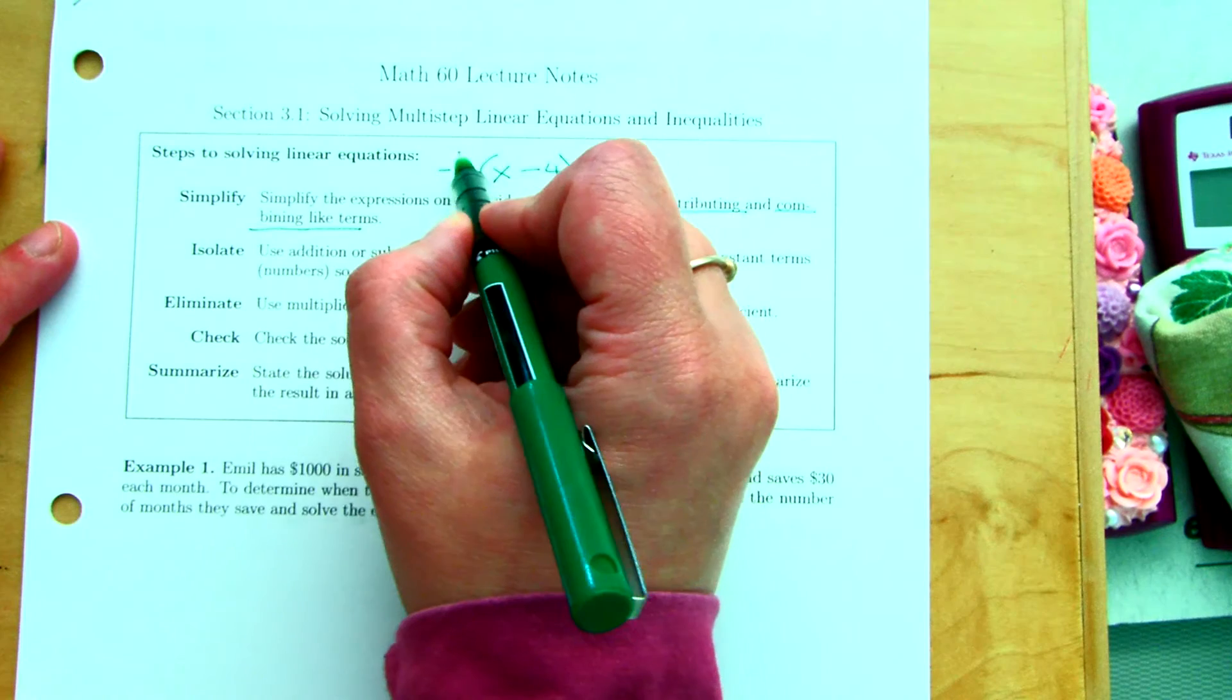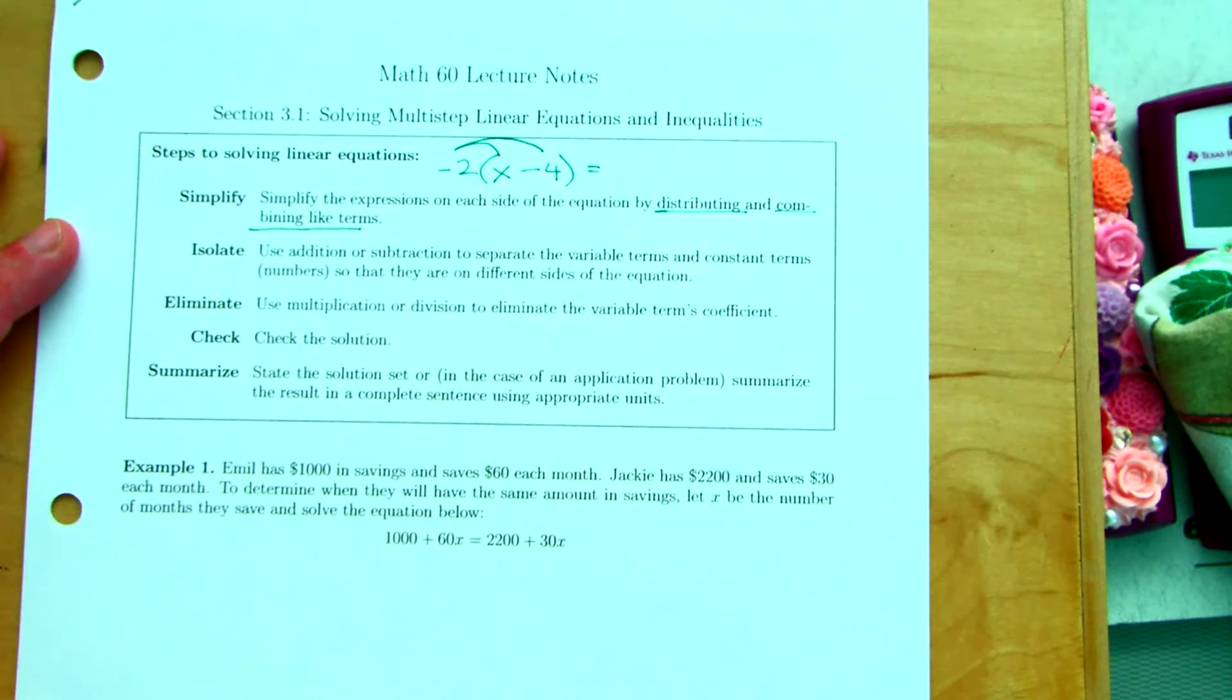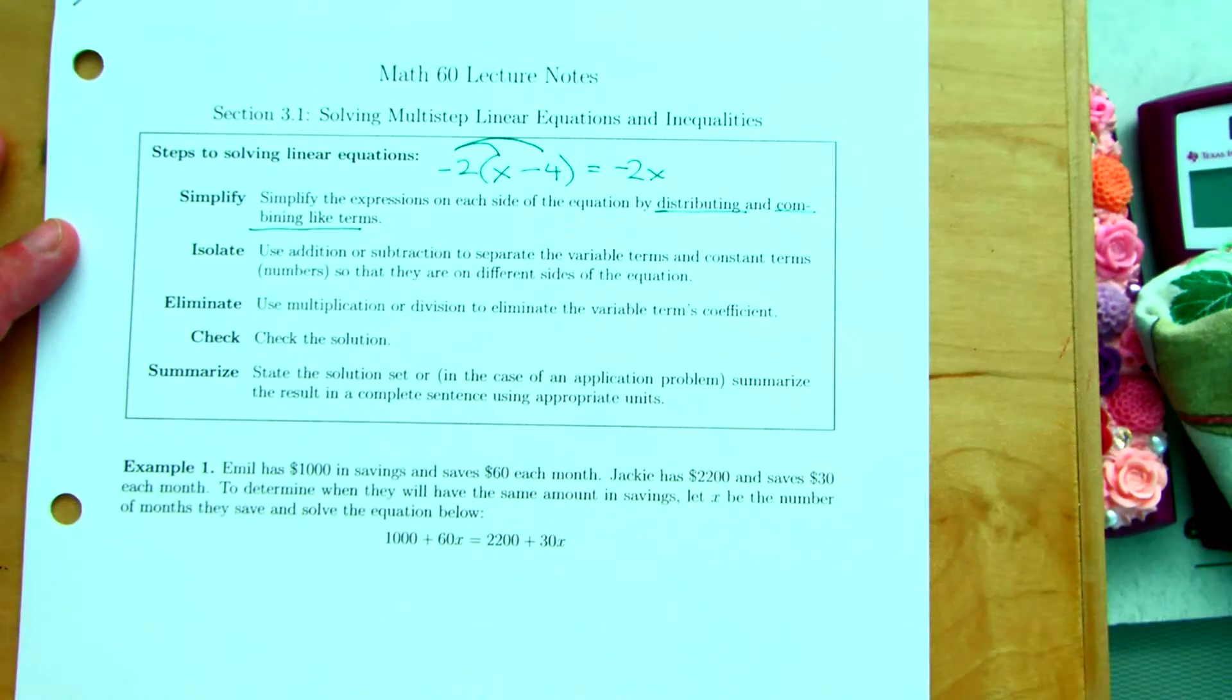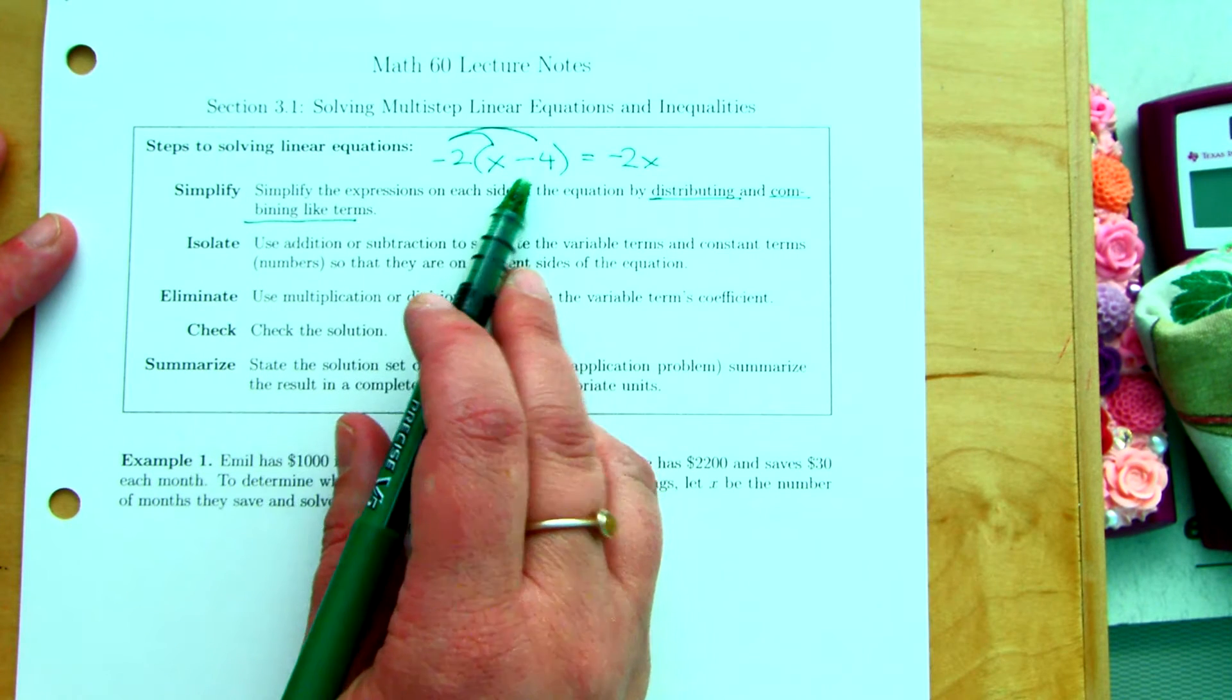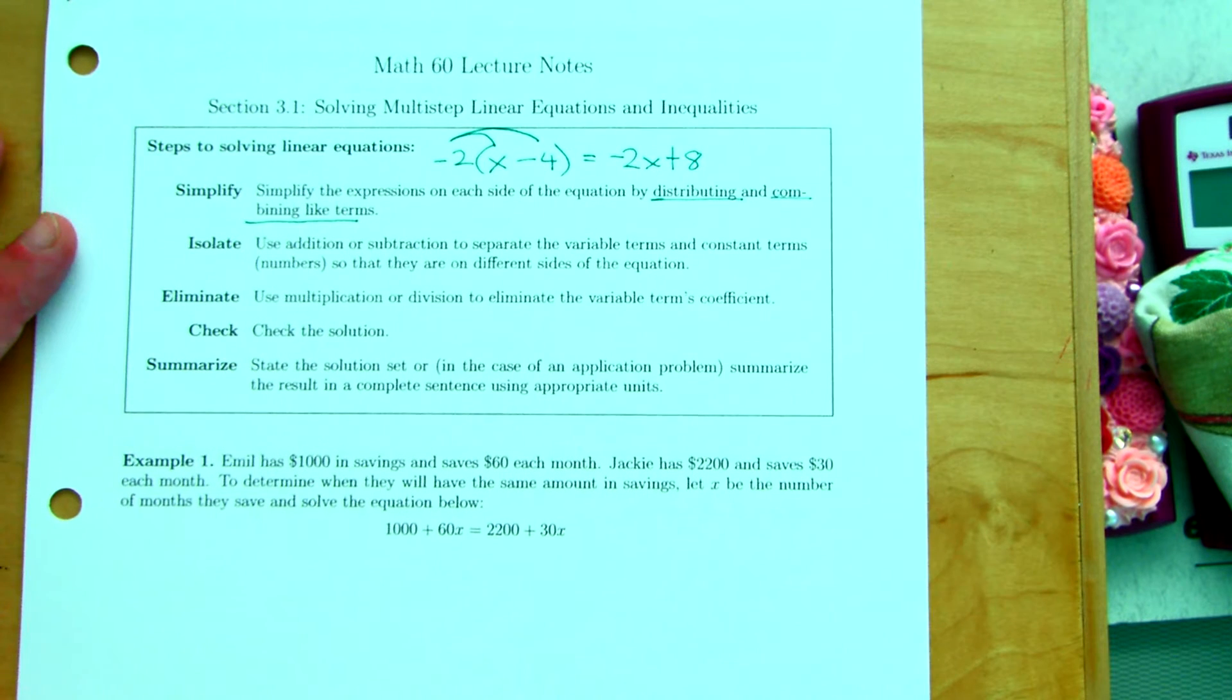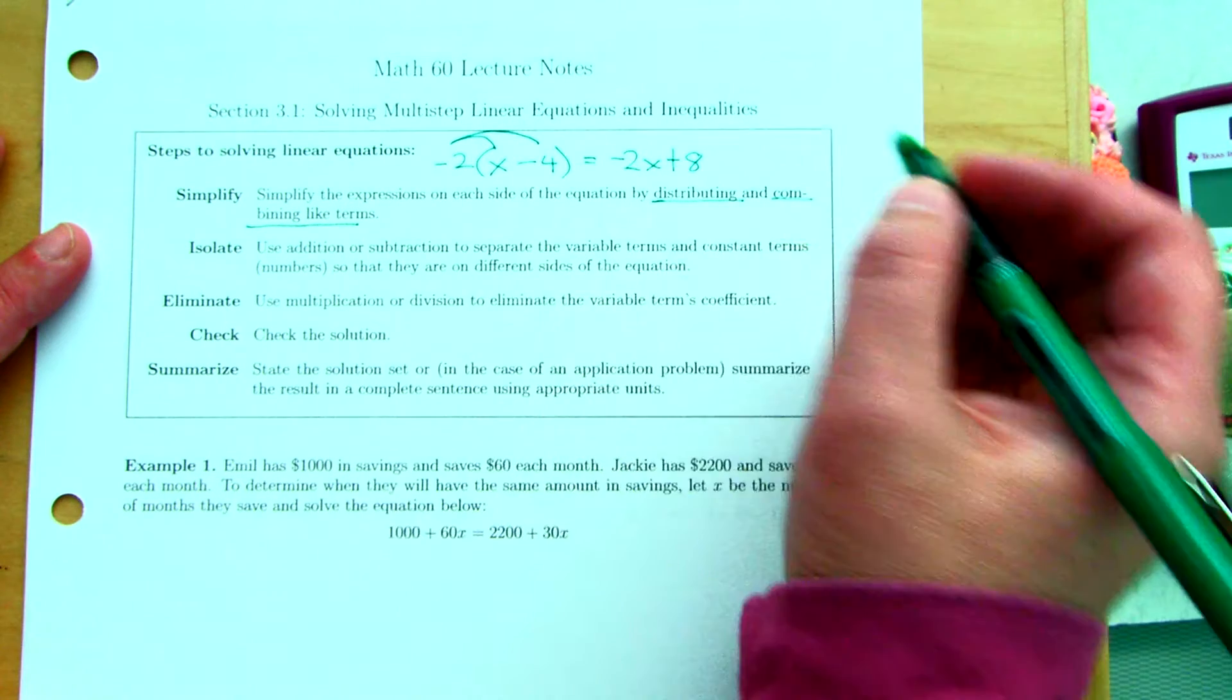So, if we were going to distribute that negative 2, what would we get? This is a negative 2, and this is a negative. This is one of the most commonly made mistakes is with the signs. And then combining like terms.